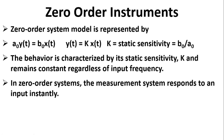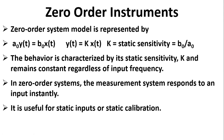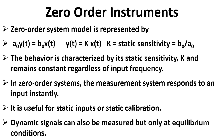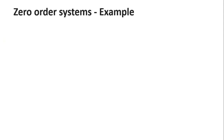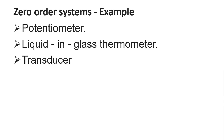In zero order systems, the output is directly proportional to the input and remains constant regardless of the input frequency. The measurement system responds instantaneously, proportional to k — like having just a resistance in a circuit, just an amplifier, just a gain of the system. Examples include potentiometer transducers, liquid-in-glass thermometers, and all R circuits with just resistance.